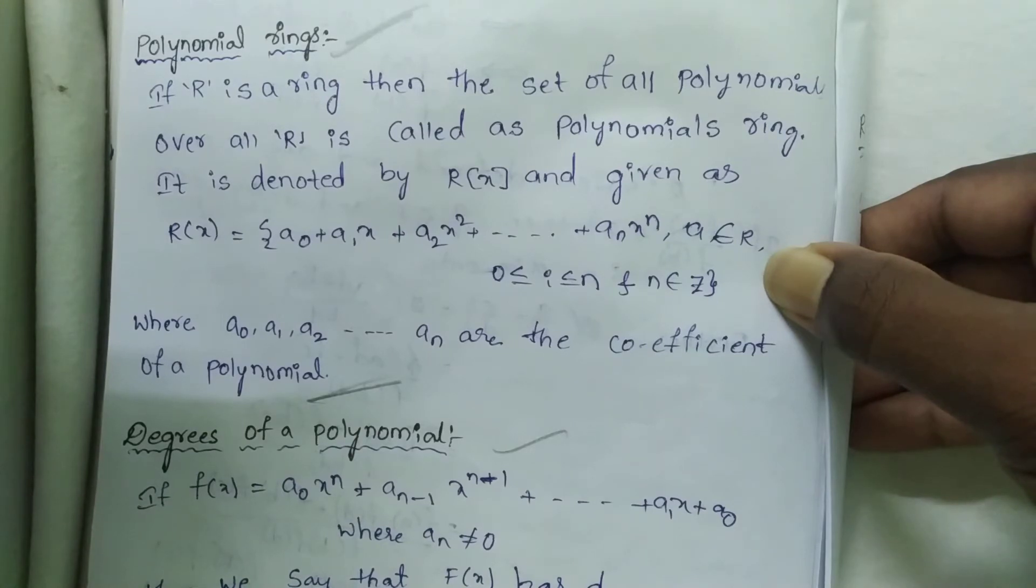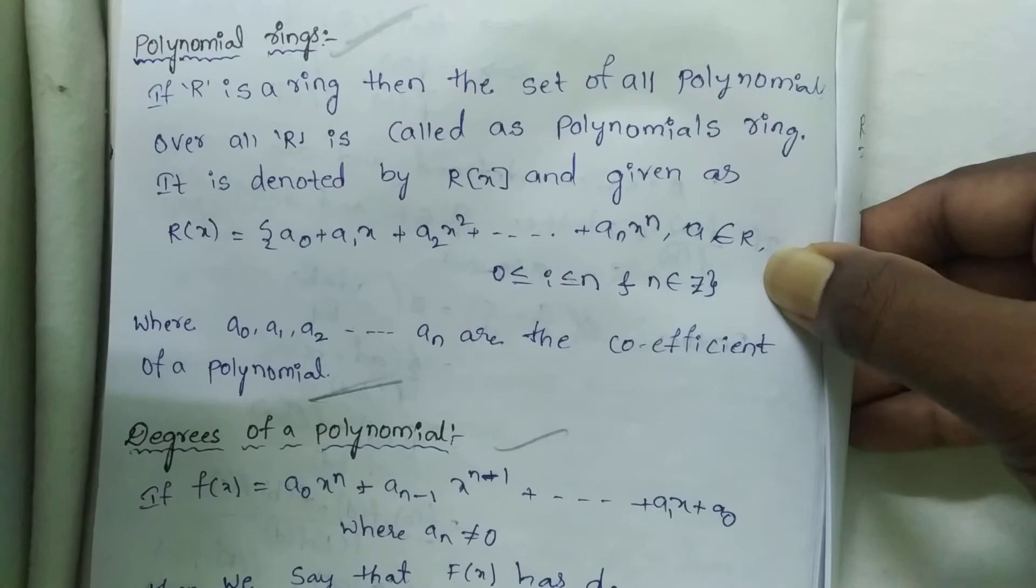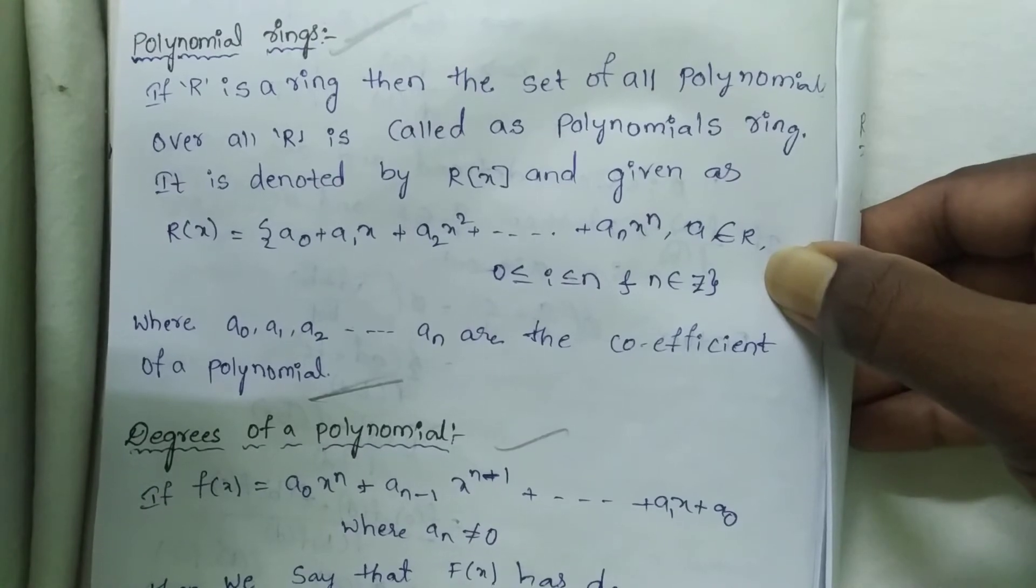Polynomial ring is very important, where a₀, a₁, a₂, and so on, aₙ are the coefficients of a polynomial.